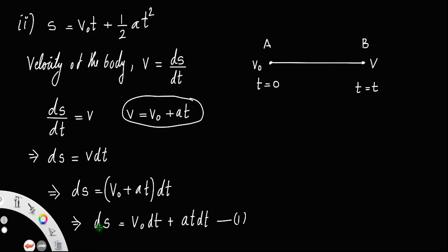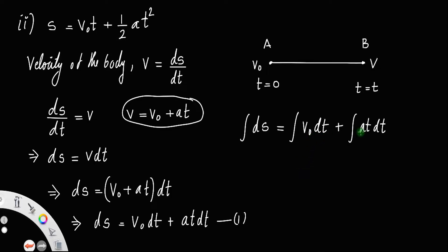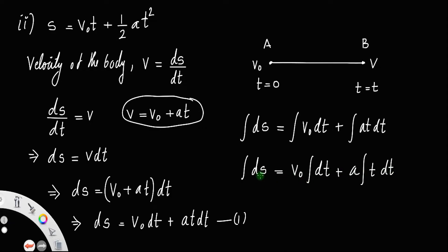In order to get the total displacement, we have to integrate this equation: integral of ds = integral of v₀ dt + integral of a·t dt. Taking the constants outside: v₀ integral of dt plus a integral of t dt. Here the variables are displacement and time only. Time changes from 0 to t on both integrals. When time is 0, the displacement is also 0, and the body is starting from point A, so the displacement at A is 0.